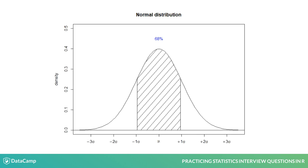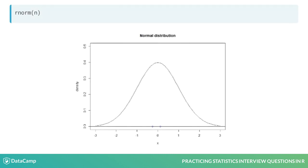The 68-95-99.7 rule states that 68% of the normally distributed data lies within one standard deviation of the mean, 95% within two standard deviations of the mean, and 99.7% within three standard deviations of the mean.